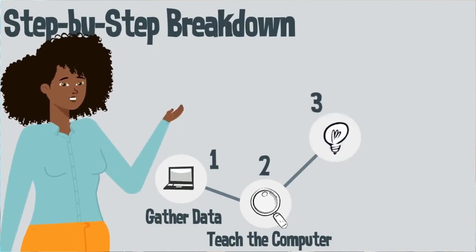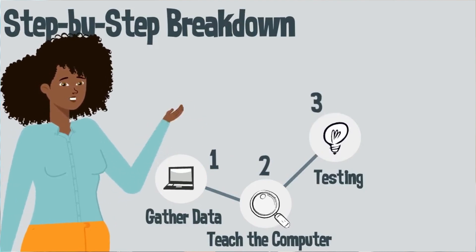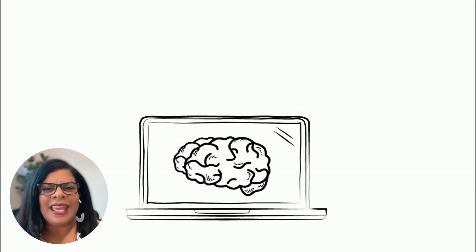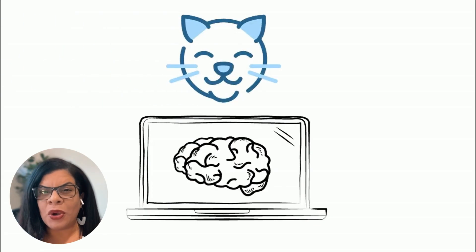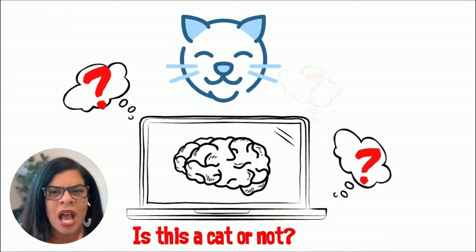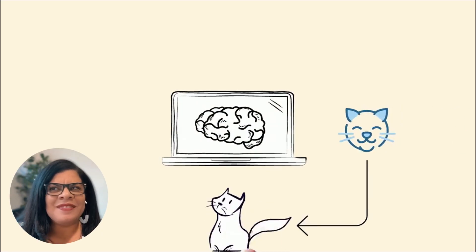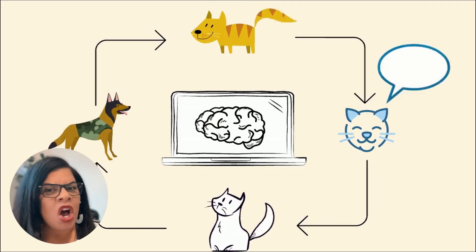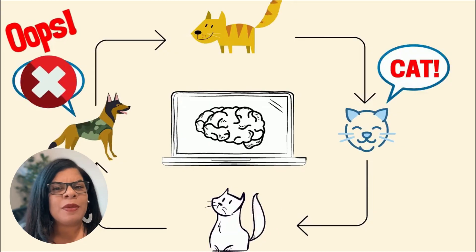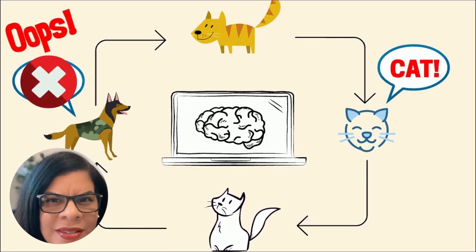Step number three is about testing the computer. Now we have to test it. Imagine showing it pictures that it's never seen before — maybe a photo of a kitten. The computer has to decide: is this a cat or not? It uses all the patterns it learned to make its best guess. Sometimes it might get it wrong — maybe it looks at a dog with pointy ears and says cat. But that's okay, because just like when you learned as a kid, mistakes are part of the process.